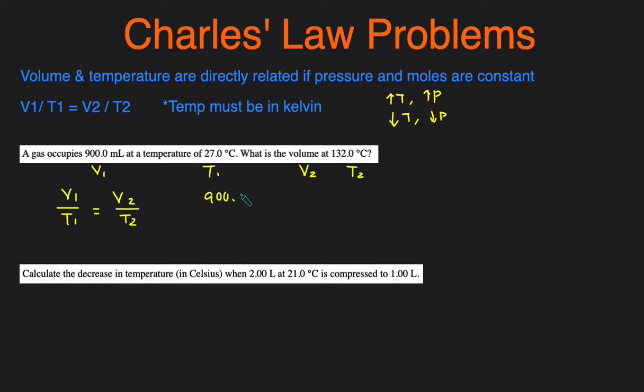Since we're given volumes and temperatures, we're going to use Charles' Law. So we'll set up V1 over T1 equals V2 over T2, and start substituting numbers in. So V1 is 900.0 milliliters. I recommend writing the units because you'll catch yourself if the units do not cancel out. And this is in degrees Celsius, so we have to convert that to Kelvin.